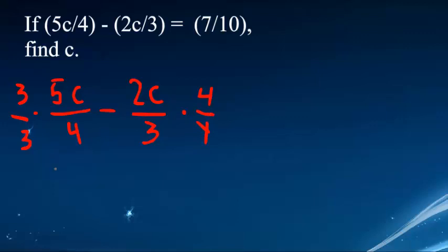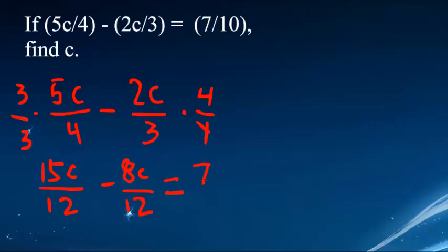So you get 15c over 12 minus 8c over 12. Now you can combine like terms: 15c minus 8c equals 7c over 12.